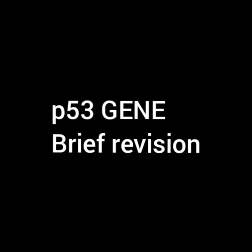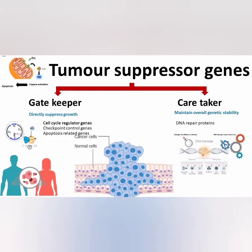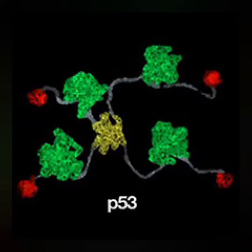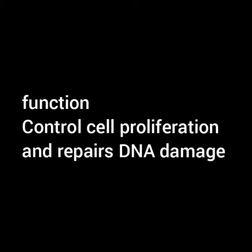Hey friends, welcome back to another video. In this video we will be talking about the topic p53 genes. p53 genes are a common type of tumor suppressor genes and they belong to gatekeepers. The p53 gene is located on chromosome 1 and is commonly known as the guardian of the genome, because it has an effective function for repairing DNA damage and inhibiting cell proliferation.